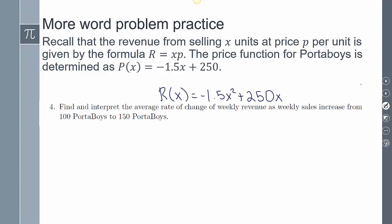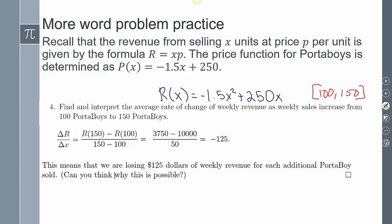Interpret the average rate of change of weekly revenue as weekly sales increase from 100 to 150. My interval is [100,150]. Entering all that in and simplifying, I get -125. That means we're losing $125 of weekly revenue for each additional Portaboy sold. One reason why this would be possible is we have to really reduce the price to increase the demand that we want. We're basically losing money to get people to purchase the product.